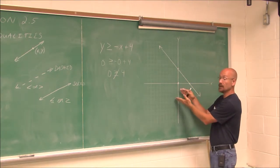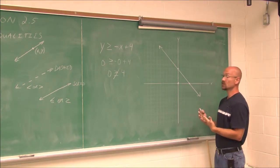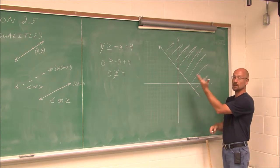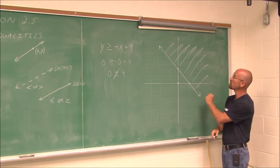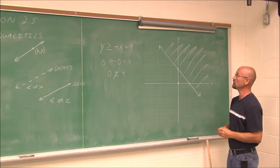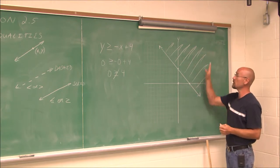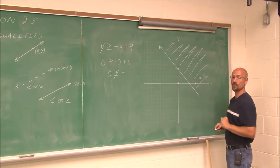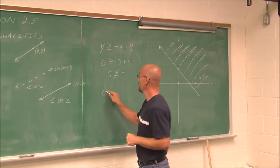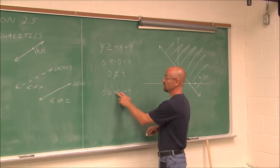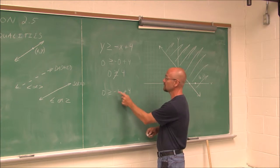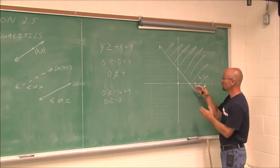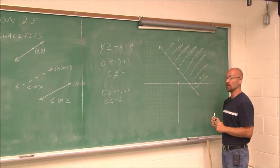Since this point is below the line and it made a false statement, none of these points below the line will make it true. So I can assume that any value above the line is a solution, and I shade that entire area. To be absolutely sure, I pick another point in the shaded plane — the point (6, 0), which is above the line. When y is 0 and x is 6, negative 6 plus 4 is negative 2, so I check: is 0 greater than or equal to negative 2? Yes, that's a true statement. So the shaded area above the line is confirmed correct.